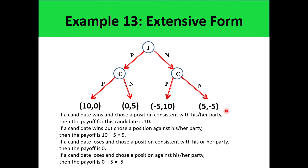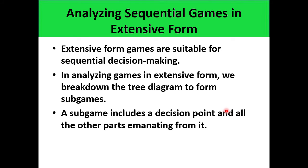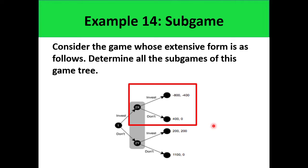Now how do we analyze a sequential game using the extensive form? We make the analysis starting from the bottom or rightmost part of the tree. In other words, we take a look at the sub-games of the extensive form. Since our diagram is oriented horizontally, we look at the sub-games — there are sub-games here, here, and the whole thing.